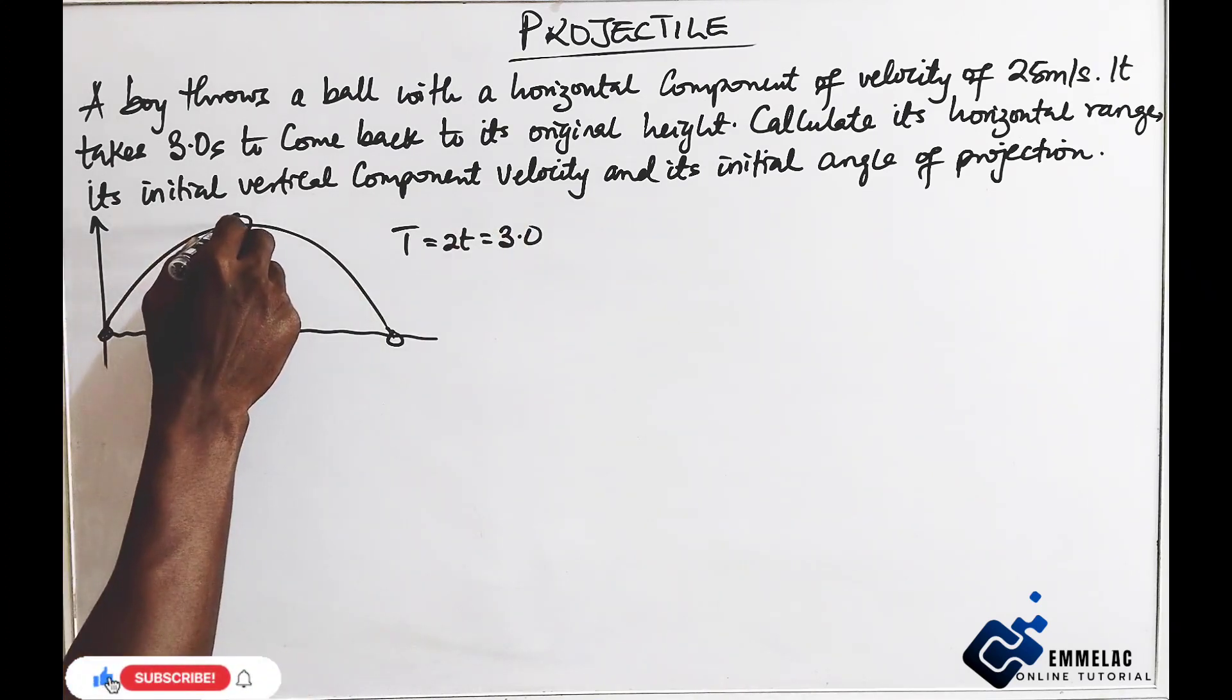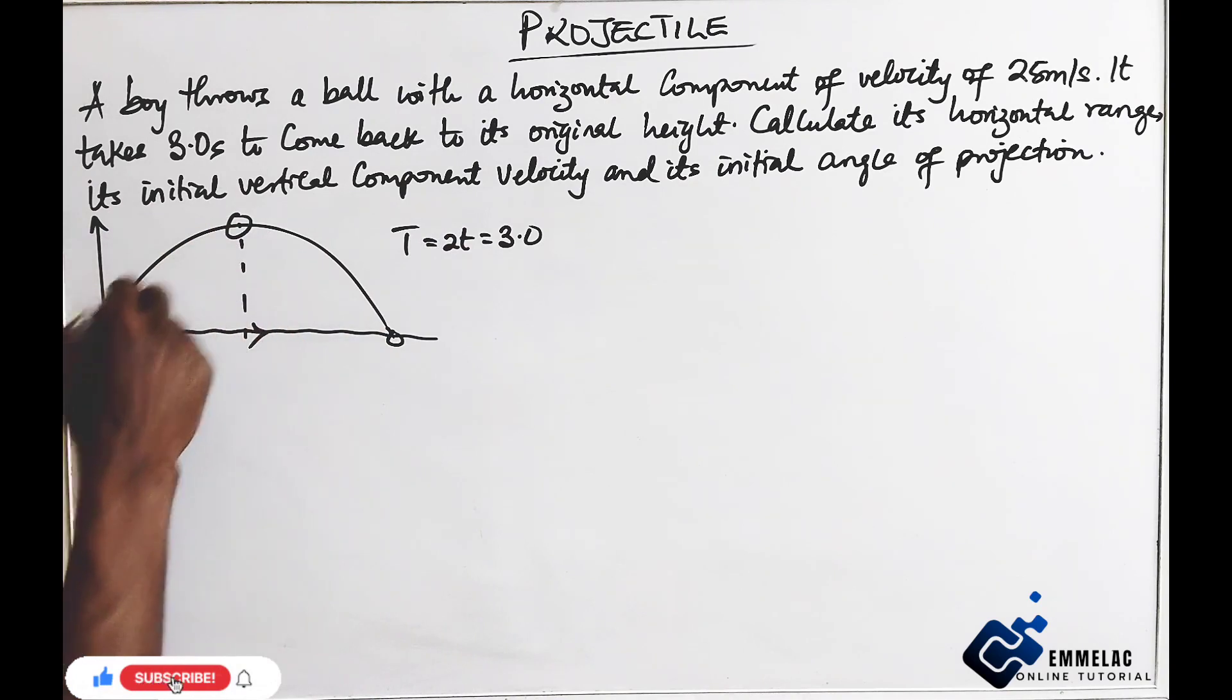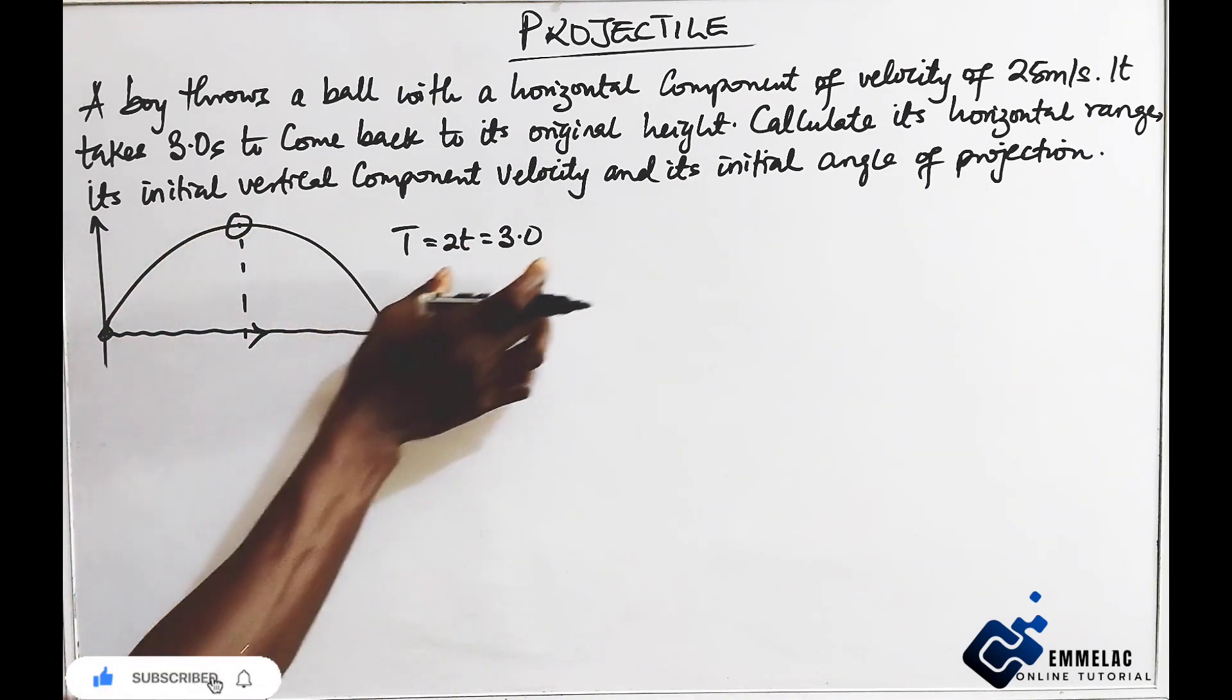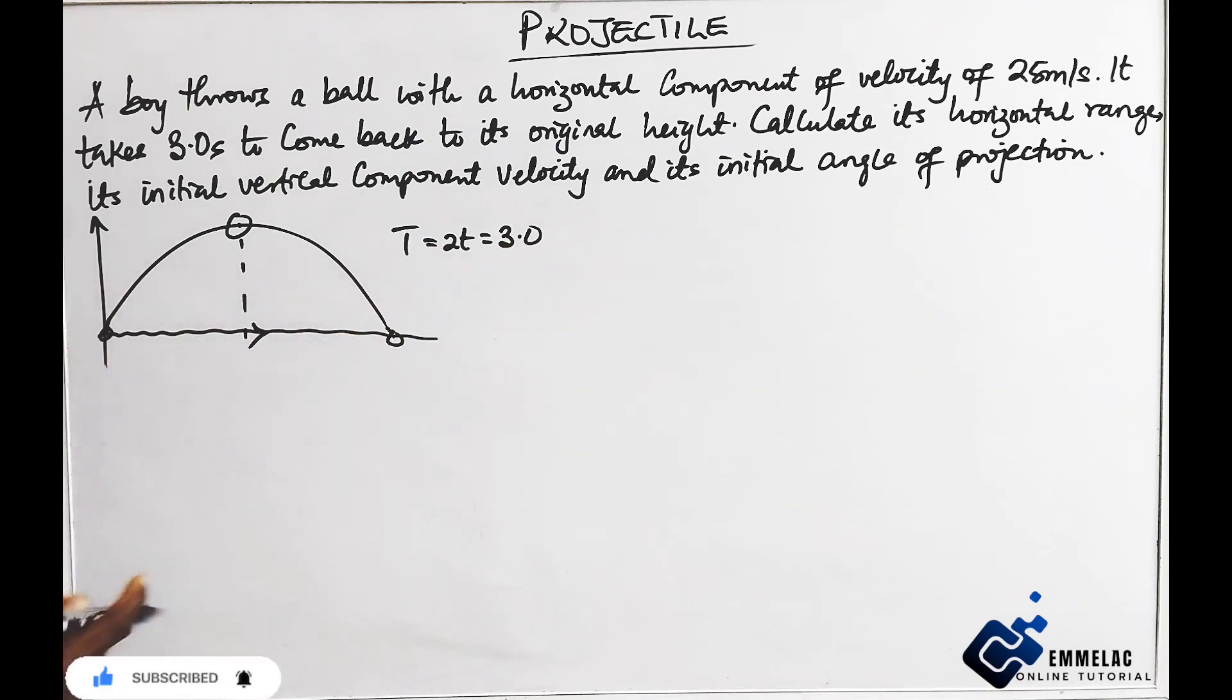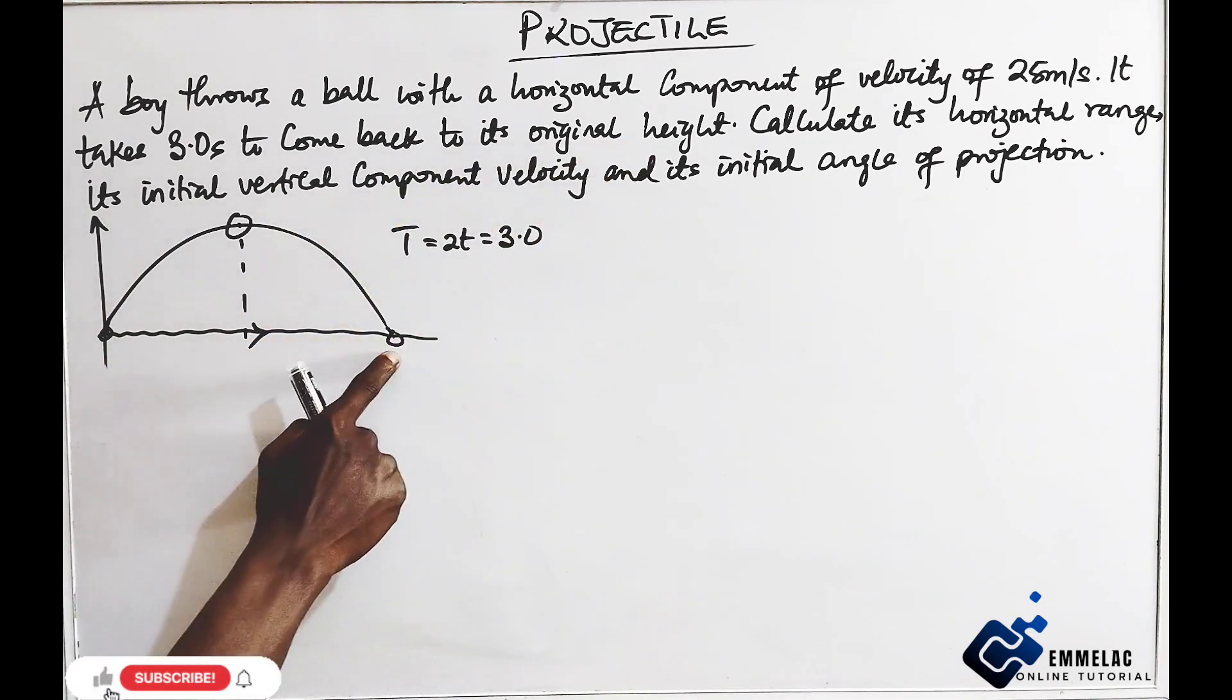From here to here is 1T. From here to here is half of the total. So the 2T here gives you the total time of flight back to its original height.